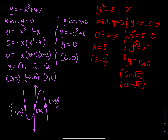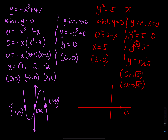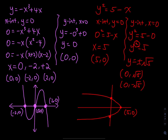The graph looks like a sideways parabola with an x-intercept at (5, 0) and two y-intercepts at (0, √5) and (0, negative √5), making it symmetric about the x-axis.